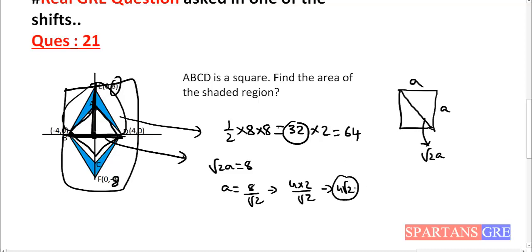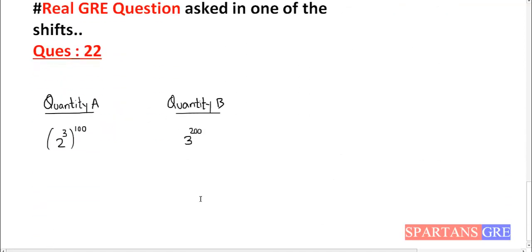So area of the square will be 4 root 2 whole square, which will be 32. So area of this shaded portion will be 64 minus 32. It will be 32. Right? So let's solve our last question of this video.